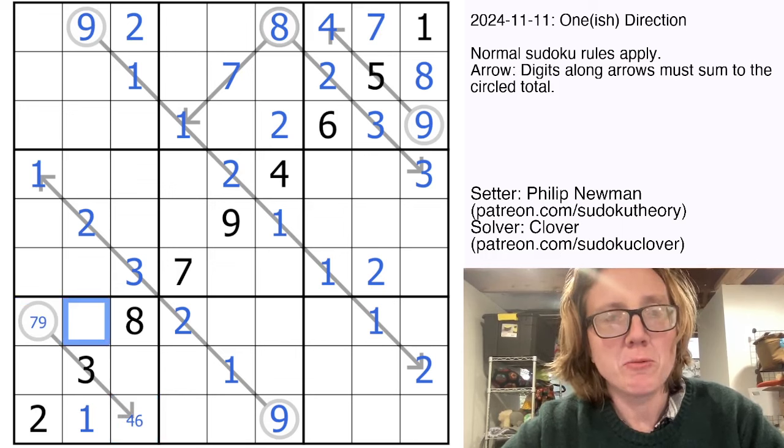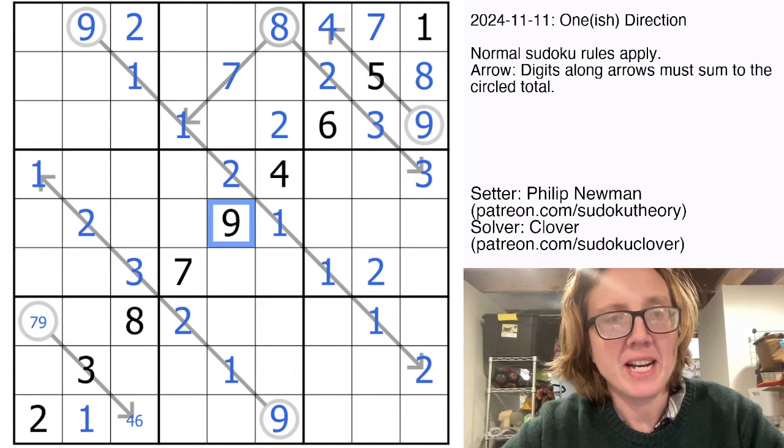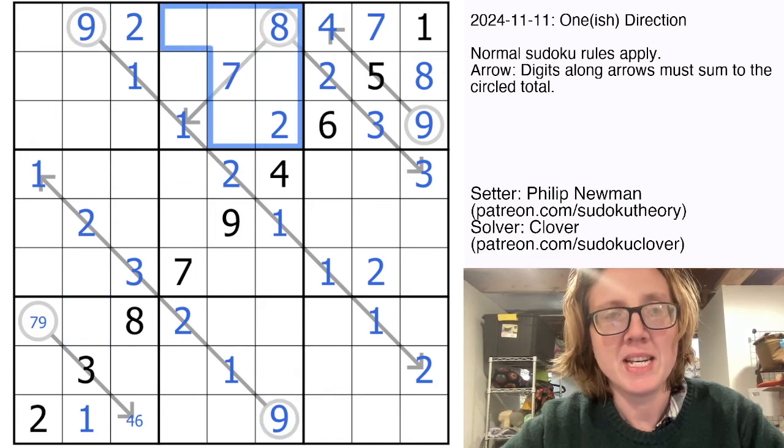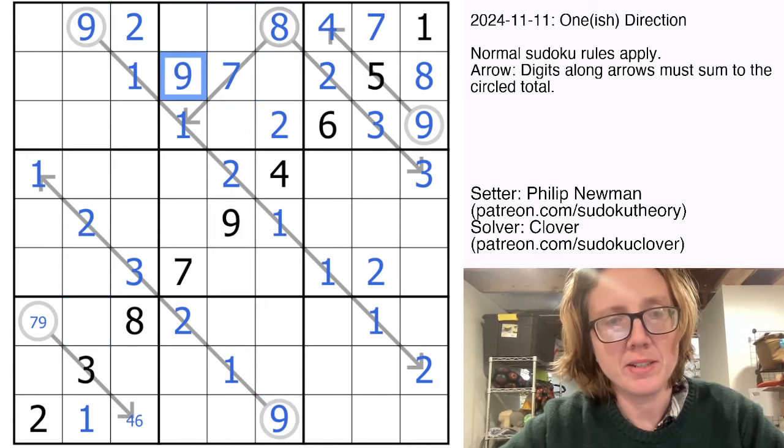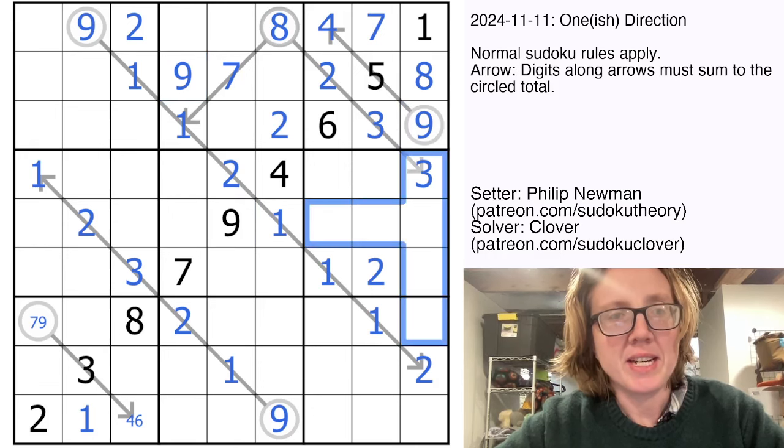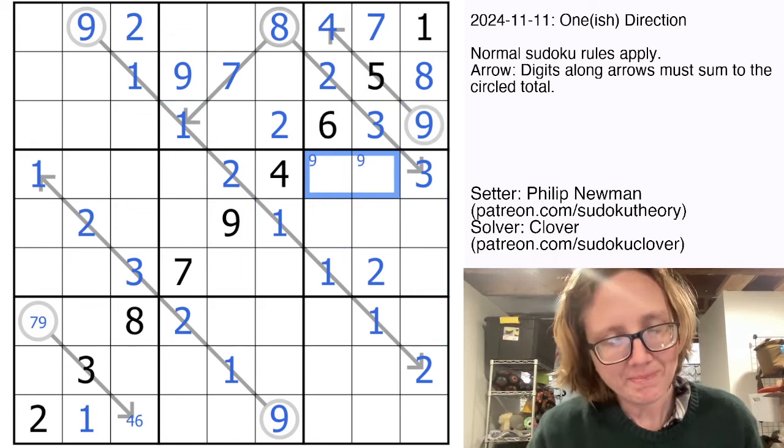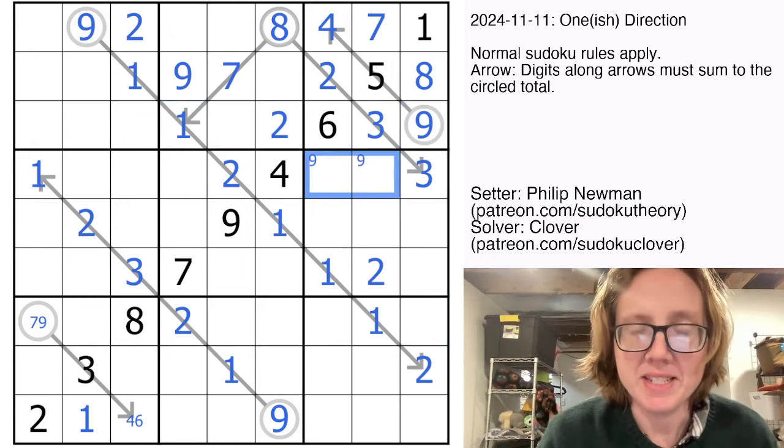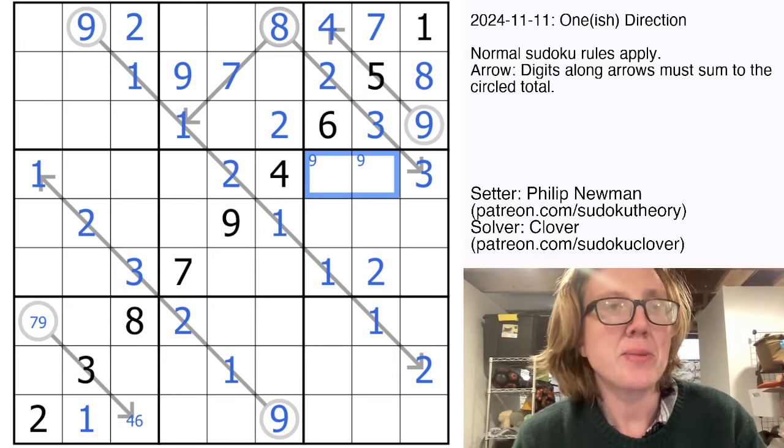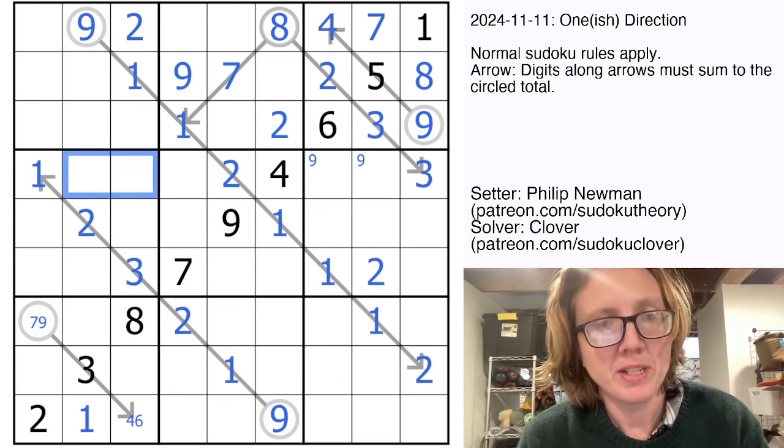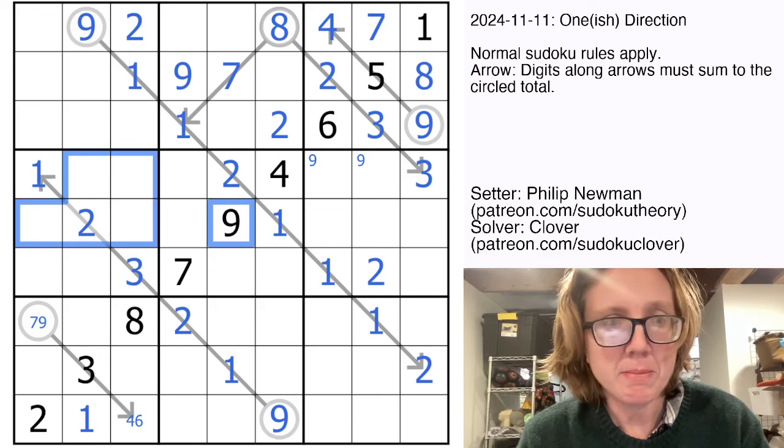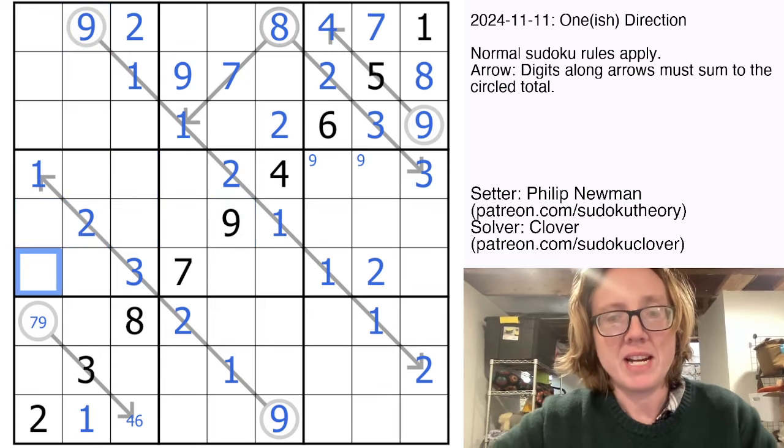And I believe our next move is going to be to work on nines. So we have nines in these three spots. So if we look at the top center region, nine can't go in those cells, so it must go there. We have a nine here and a nine here, and that tells us nine is in one of these two positions. Now, because nine is in one of those two positions, we already know there's a nine in row four. So we can't put a nine anywhere else in row four. We also can't put a nine in those two cells because there's a nine right in the middle, and we can't put a nine there because there's a nine in the column. So nine goes there,